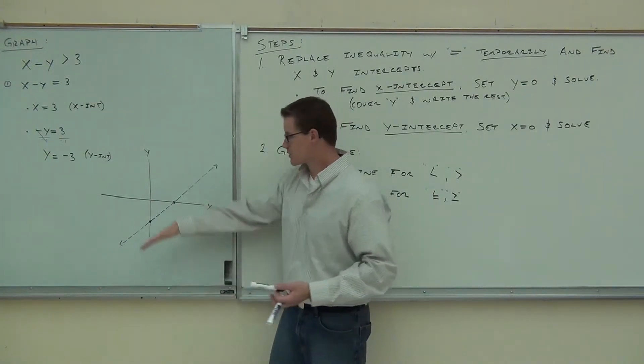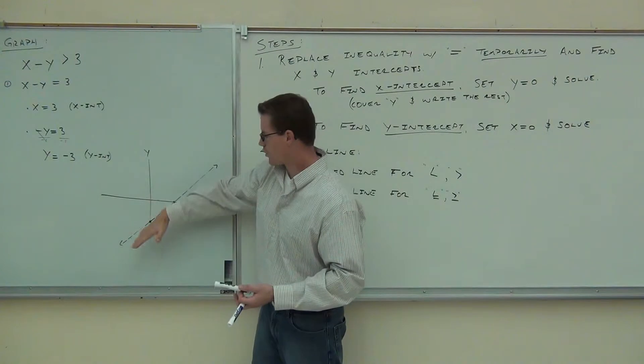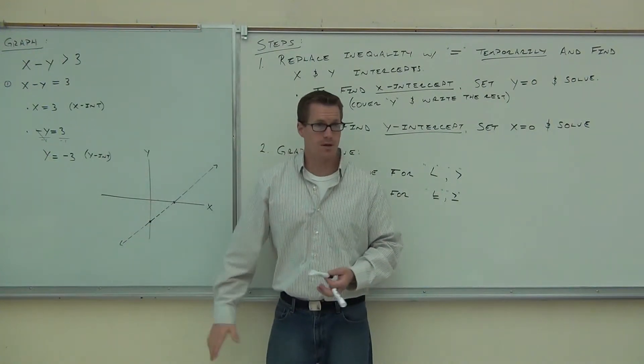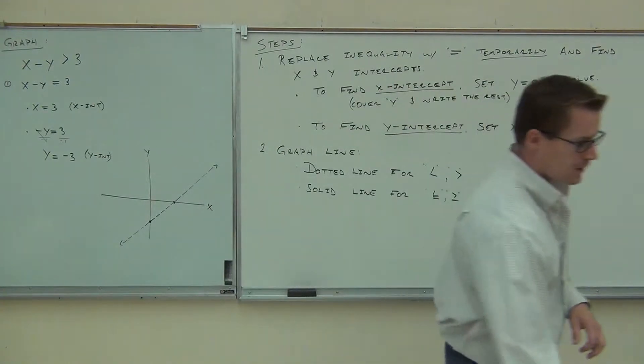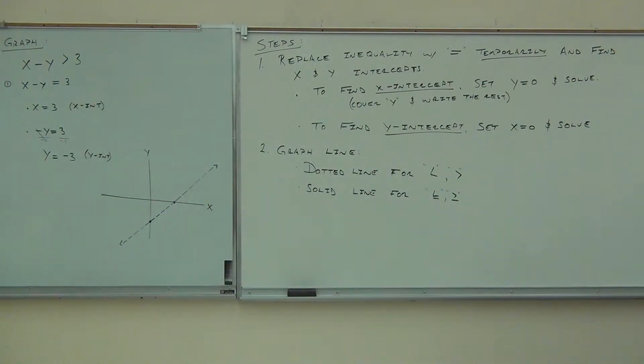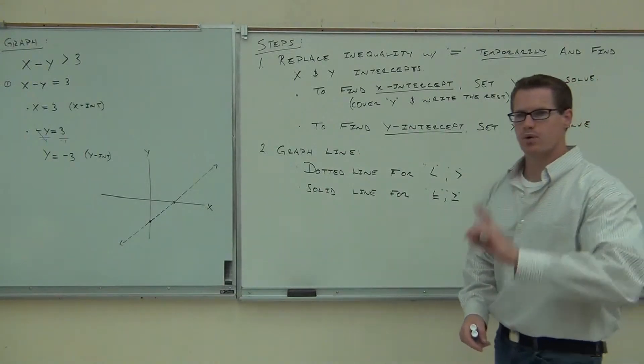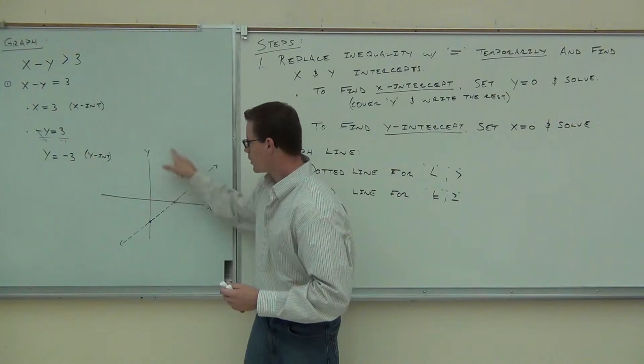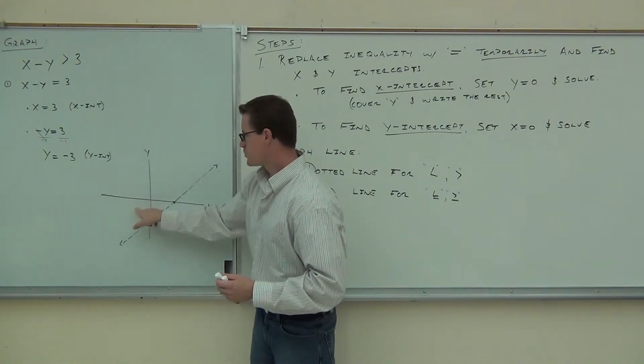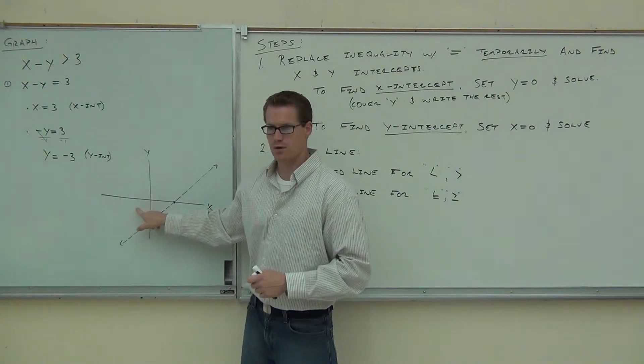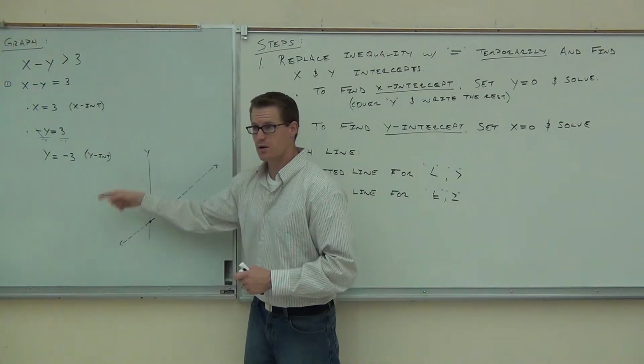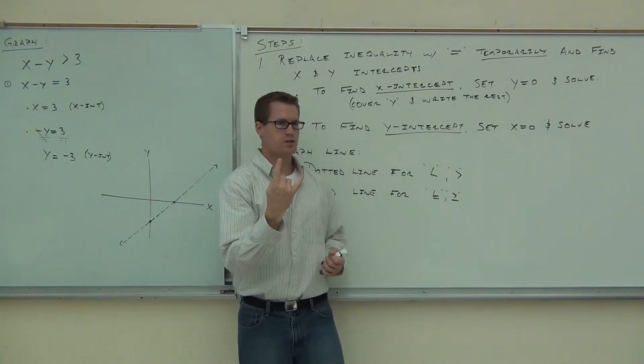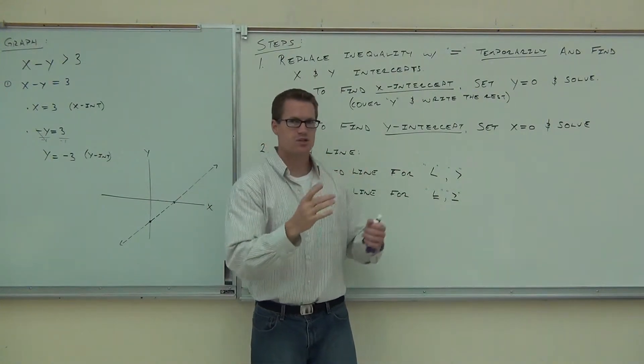It's going to be half of them. It's either going to be all of these over here that are all going to work, or all of these over here that are all going to work, and the other side won't work. That's going to be our final step here. Our final step is going to be to check one point. You don't have to check a whole bunch. That's kind of nice. You just have to check one point. Because if this point works here, all of these points are going to work. If this point doesn't work, all of these points are not going to work.